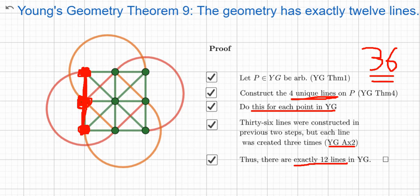And so then we're done, right? It's just a combinatorics argument. So once you've proven that there are exactly four lines on each point and that there are exactly nine points in the geometry, the fact that there are exactly 12 lines is just a mathematical or combinatorics argument.